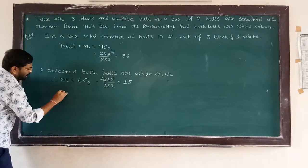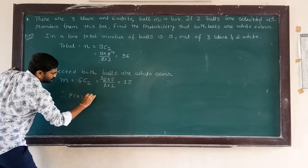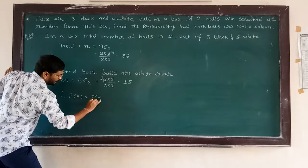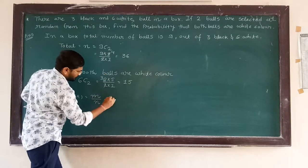So probability of P of A is equal to M upon N, which is 15 upon 36.